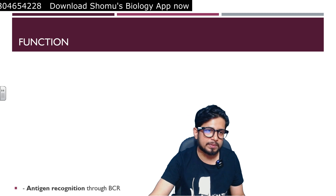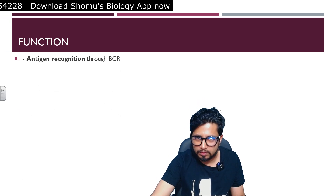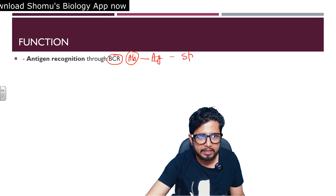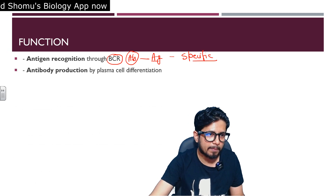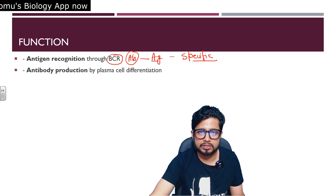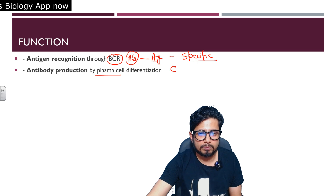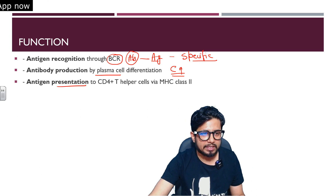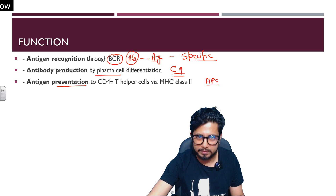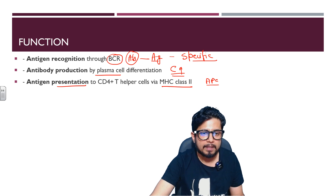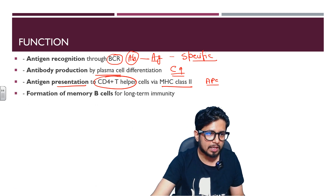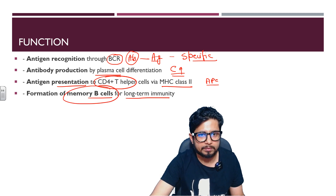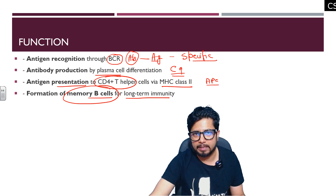The functions of B cells include: antigen recognition — through the BCR, the B cell binds to specific antigens with very high specificity. Next is antibody production — after maturation, B cells are converted into plasma cells with high cytoplasm content, which are antibody-producing factories. Third is antigen presentation — B cells act as professional antigen-presenting cells using MHC class 2 molecules to showcase antigen fragments to CD4 T helper cells. Fourth is formation of memory B cells for long-term immunity.